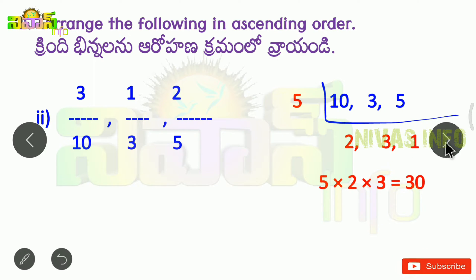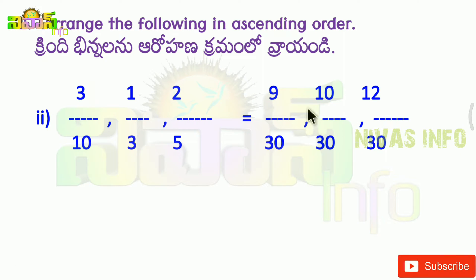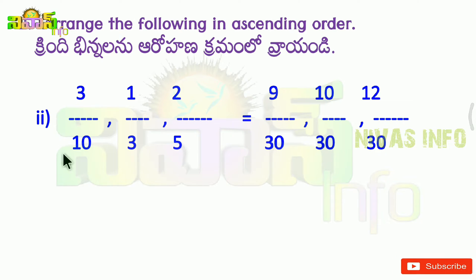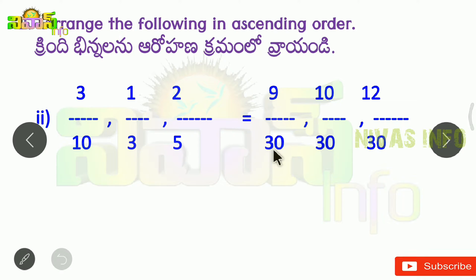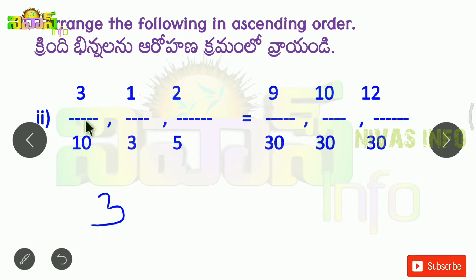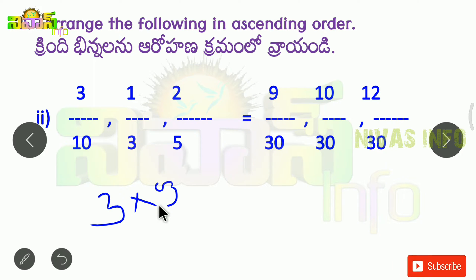Now we need to find the denominator. We need to show the first fraction. In the first fraction, the denominator is 10. Now we have 30. How many times in the table? It is 10 times 3. So we need to multiply by 3. In the numerator, we need to multiply by 3.